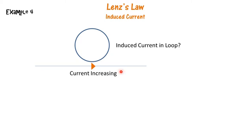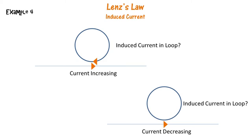Here we have a current-carrying wire with increasing current and a loop placed next to it. For the segment of the loop closest to the wire, the induced current will oppose the increasing current — flowing in the opposite direction as per Lenz's law. Similarly, if the current in the wire is decreasing, the induced current in the loop will flow in the same direction as the wire current — anticlockwise — to support the decreasing current.